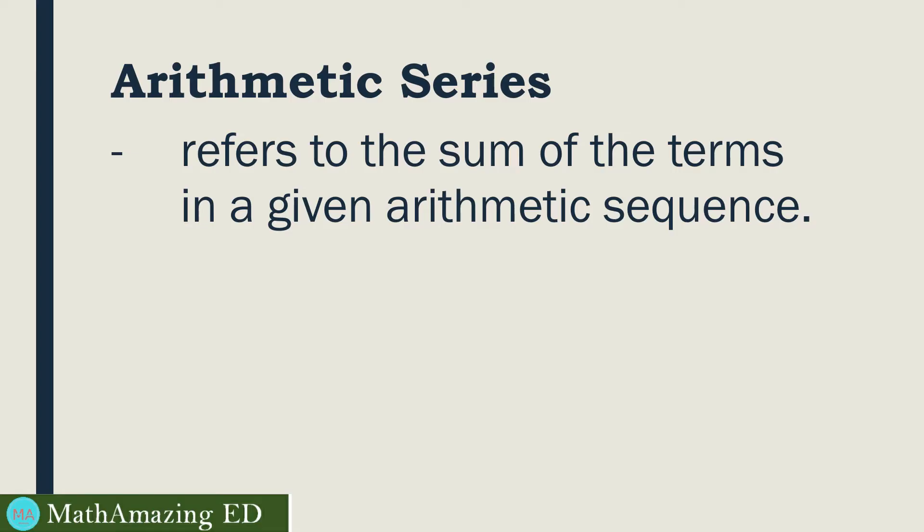So if 5, 10, 15, 20, 25, and 30 is an arithmetic sequence, its sum, which is 5 plus 10 plus 15 plus 20 plus 25 plus 30, is called the arithmetic series. It is expressed as S sub n. S here refers to the sum, and the subscript n refers to the first n terms. In other words, it is read as the sum of the first n terms.